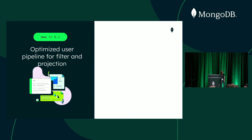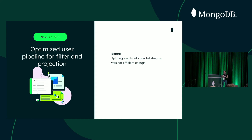The next feature is optimized user pipelines. This happened in a dot release and is available on Atlas for production. When you split your change streams into multiple distinct ones — for example, all inserts on one stream and all updates on another — it wasn't always very efficient. After this optimization, we've seen about twice higher throughput when you divide your change streams into more distinct ones.